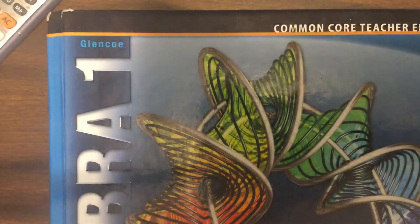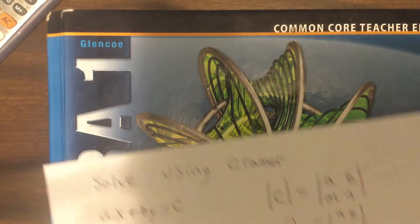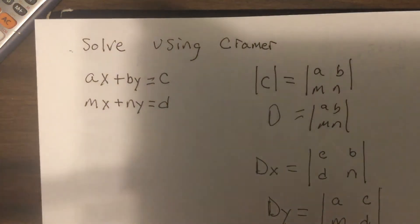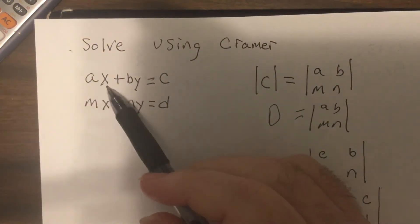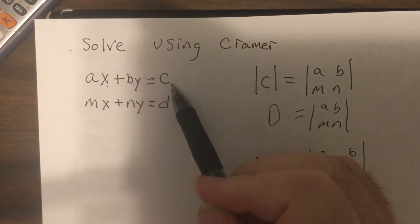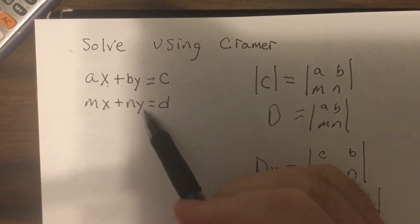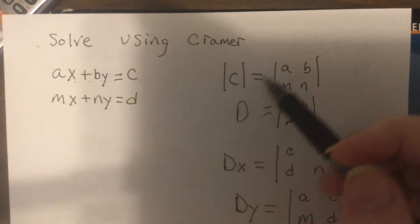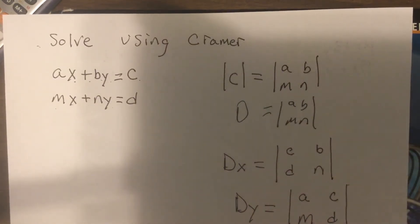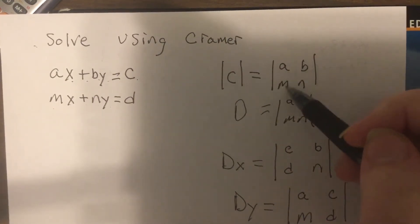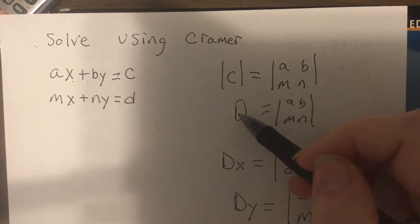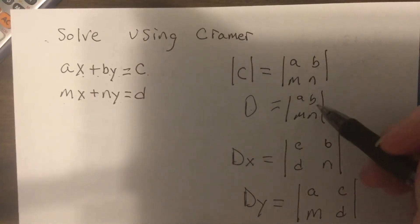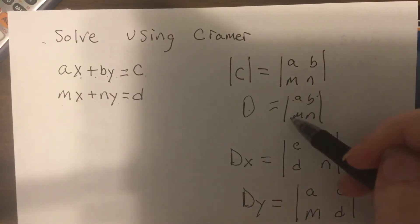Now, we're actually going to solve using Kramer. So let's say we have an equation AX plus BY equals C and MX plus NY equals D. So first we, they call it the coefficient matrix, whatever that is. That's where you just put the coefficients in. I call it the big D. So A, B, I was really sloppy here, wasn't I?